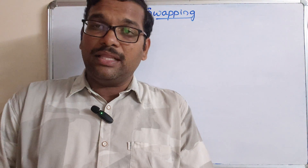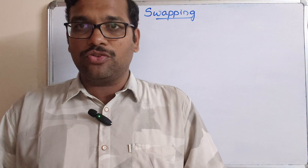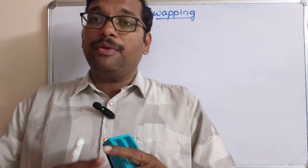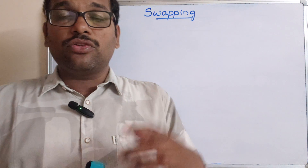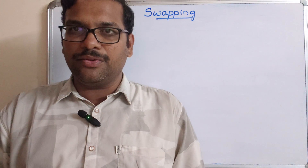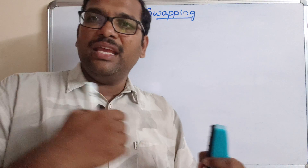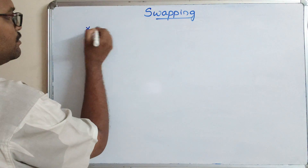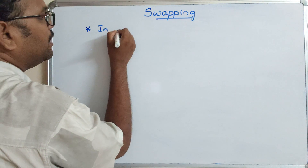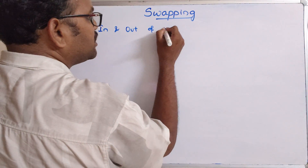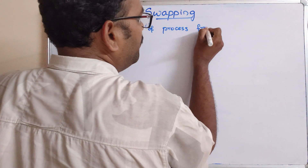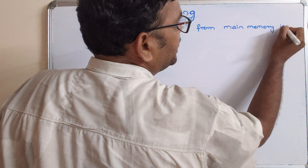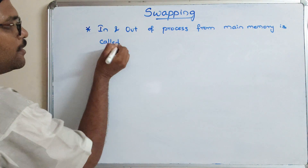So what does swapping mean? The CPU will execute a process only from the main memory — it can only access and execute processes that are in main memory. So if a process is available in secondary memory, it must be loaded into the main memory before it gets executed. This process of moving processes in and out of main memory is called swapping.